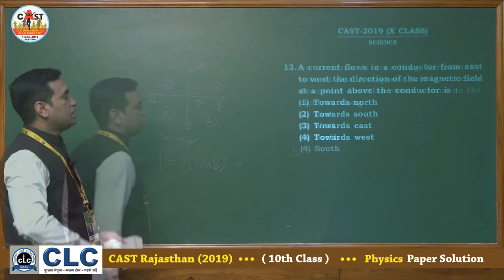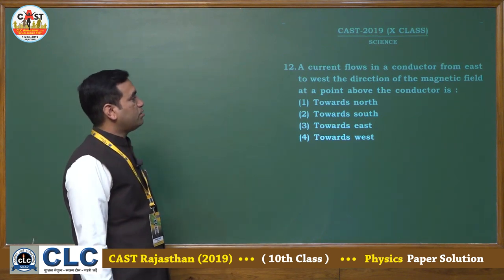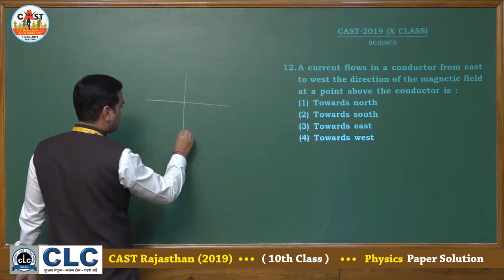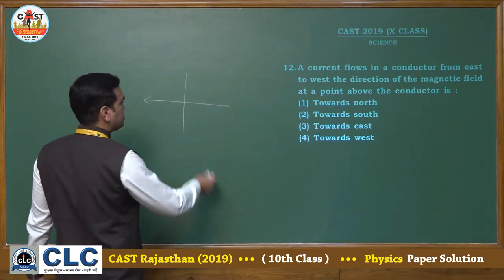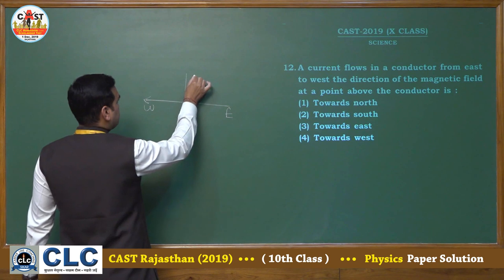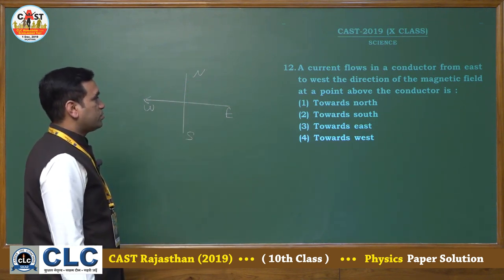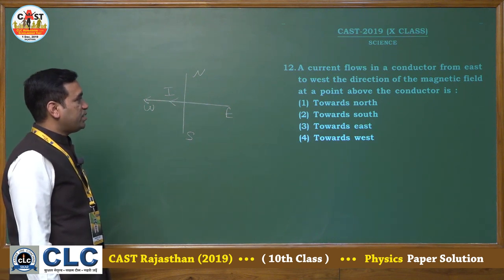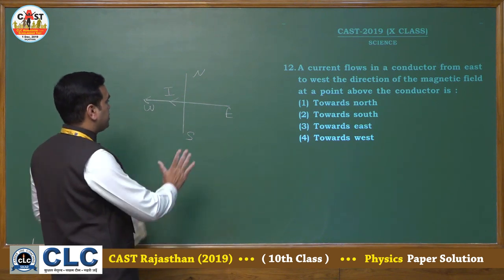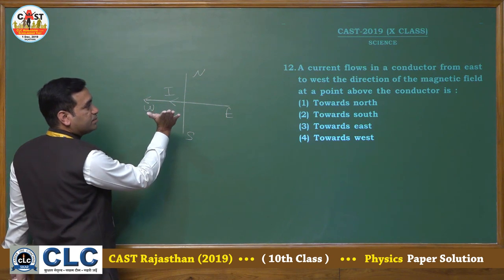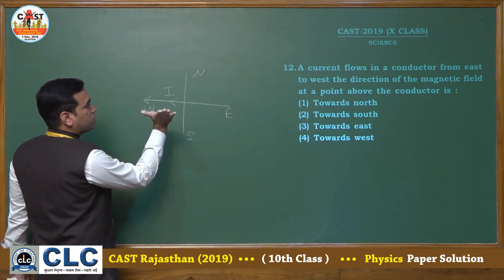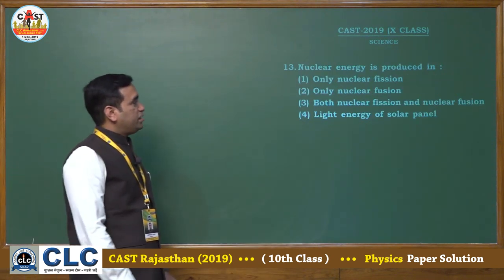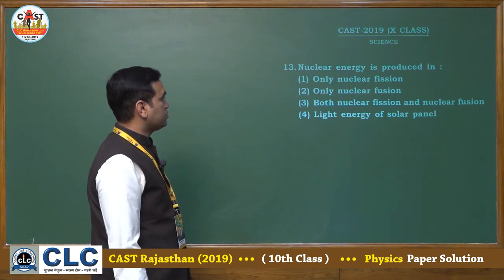The next question: a current flows in a conductor from east to west — find the direction of the magnetic field at a point above the conductor. Drawing the conductor with current flowing west: by the right-hand rule applied to a straight wire, the magnetic field above the conductor will be in the north direction. The correct answer is towards north.